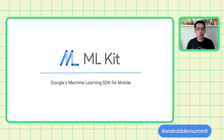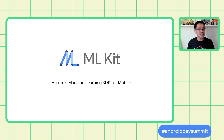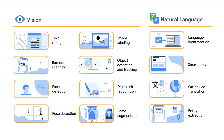ML Kit is Google's machine learning SDK for mobile. It brings Google's machine learning expertise to mobile developers in a powerful and easy-to-use package, making your Android and iOS apps more engaging, personalized, and helpful with solutions optimized to run on mobile devices. Since ML Kit launched in 2018, we've created 12 unique APIs covering core use cases in vision and natural language processing.